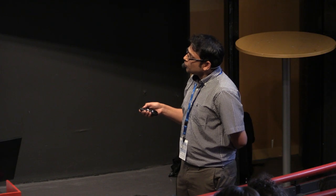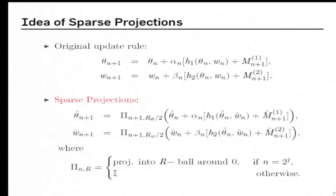And if it is not, then we just leave it to be the identity operator. Okay, we call it sparse because we use projections only exponentially sparsely. Okay, that's why we refer to it as the sparse projection.